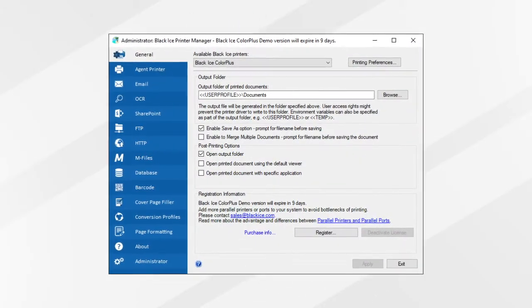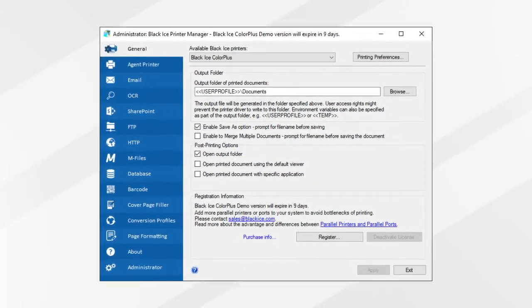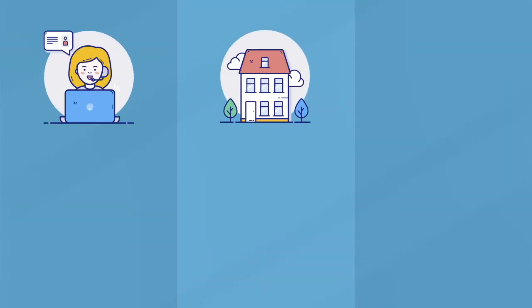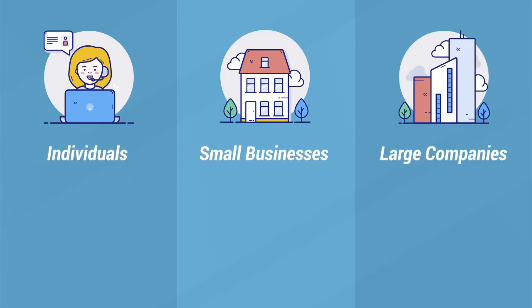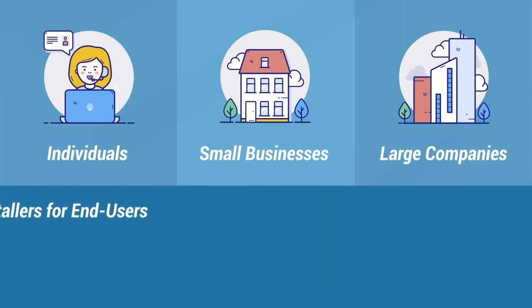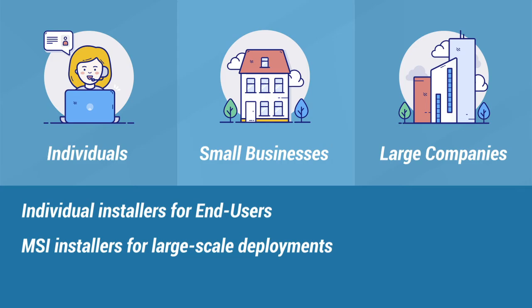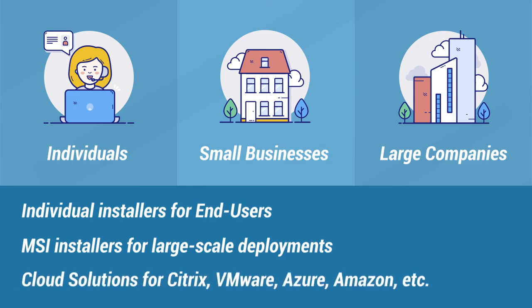All Printer Drivers come with the Printer Manager utility, which provides an easy-to-use interface to interact with the printer drivers. Black Ice Software offers scalable solutions from small businesses to large companies — you can install the printer drivers individually on computers like any other software, or use the MSI installer designed for large-scale deployments in Active Directory environments. The team also has seamless solutions for Citrix, VMware, Amazon AWS, Microsoft Azure, or other cloud-based environments.